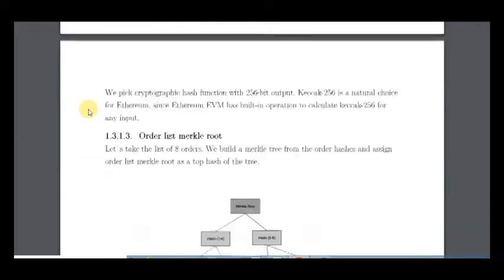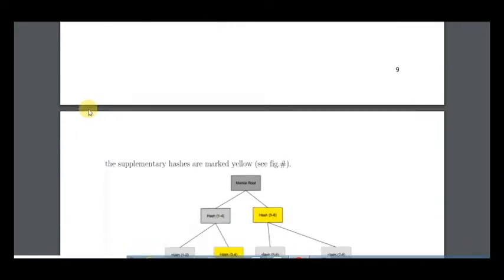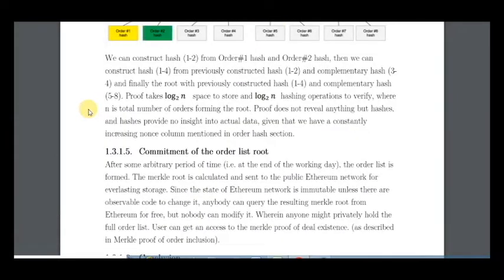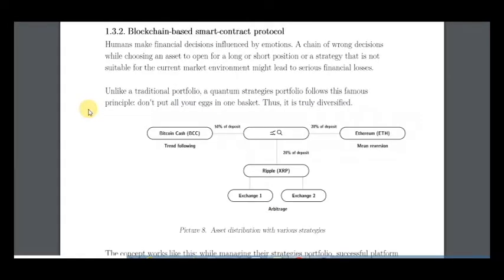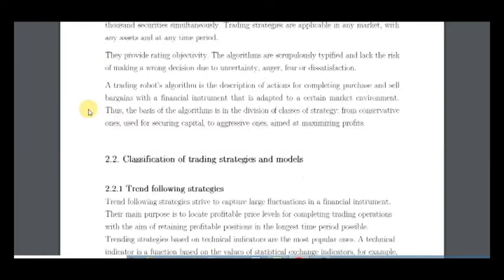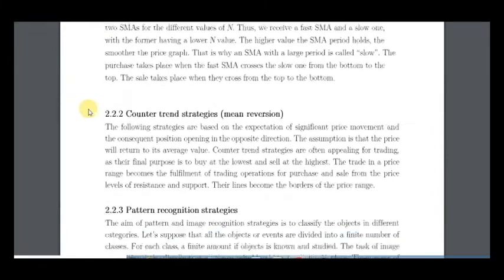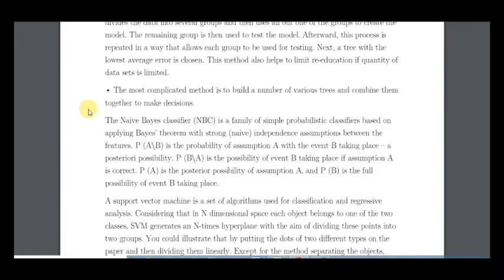After some arbitrary period, a list of operations is formed and it looks very comfortable. This interface will be very great, and as you know they will be listed on KuCoin, which is a very good platform with high security. The smart contract for this project includes risk level, minimal balance, target profitability, a wide list of exchanges, investment period, and number of deals.